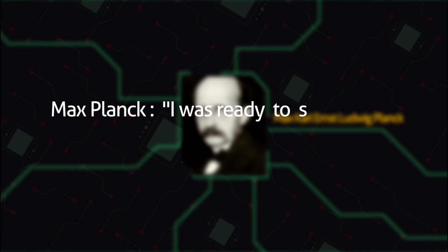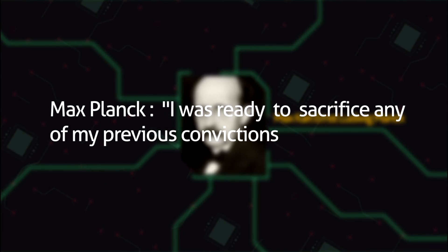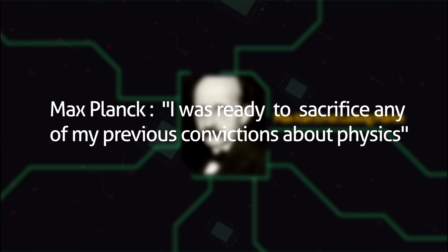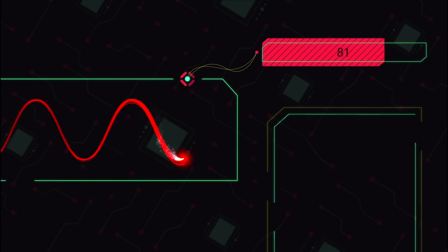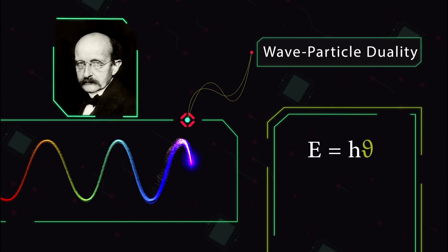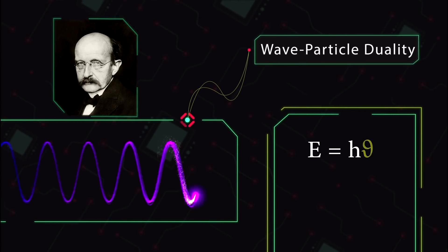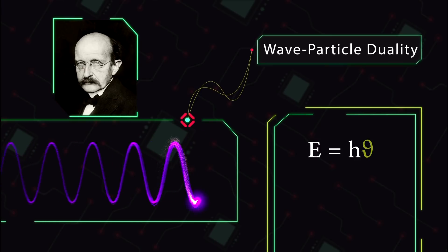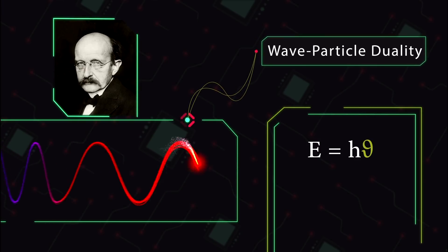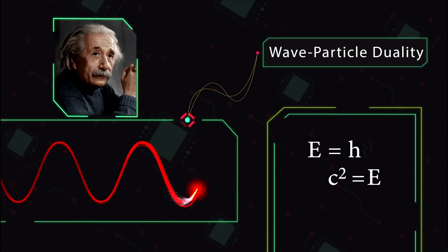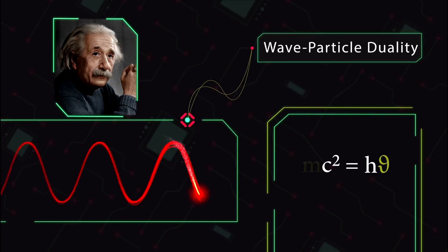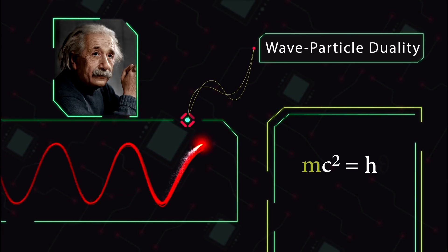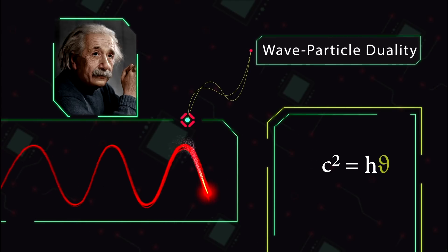I was ready to sacrifice any of my previous convictions about physics. In 1899, Max Planck calculated the energy of photon using different wavelengths. But some time later, he and his colleagues put this experimental laboratory value equal to the theoretical equation E equals MC². And this was the problem. So they tried to consider the mass as a variable to make their equation work.